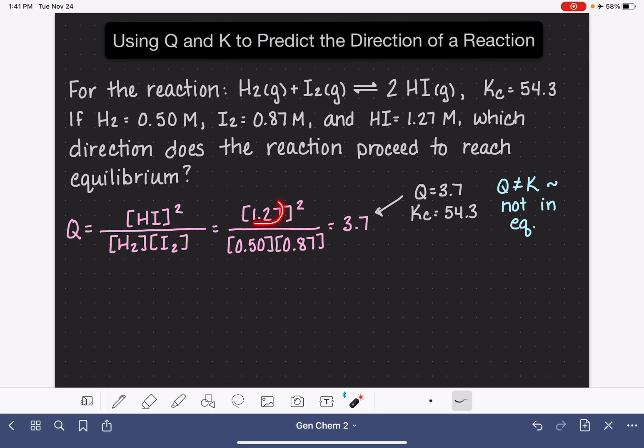In order to get itself to equilibrium, it's going to need to change the concentrations of HI, H2, and I2, change the numerical values in order to get this number all the way up to 54.3, the value of the equilibrium constant.